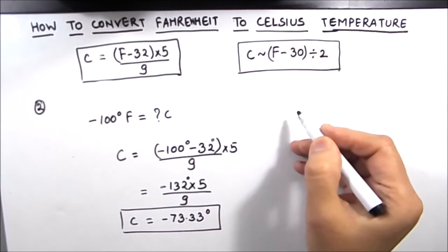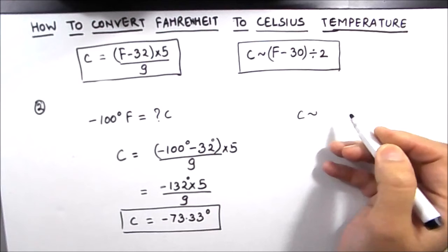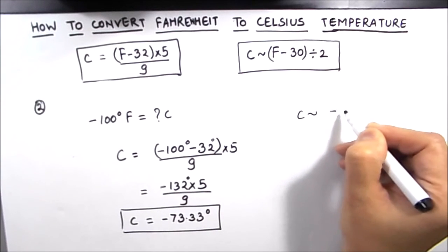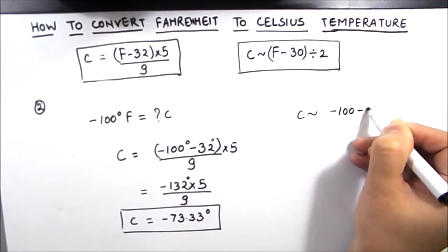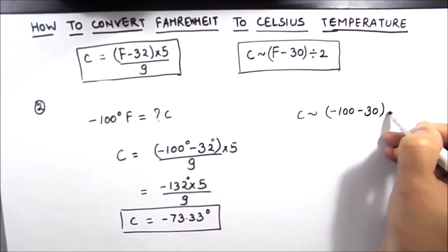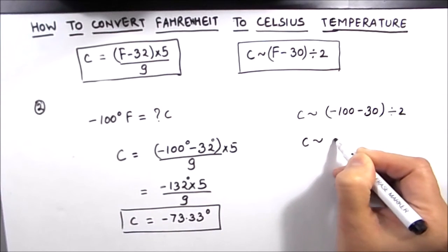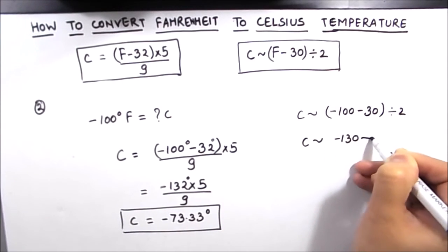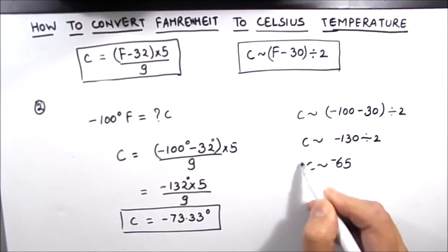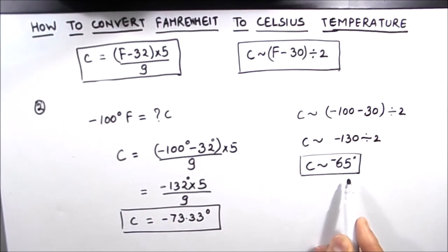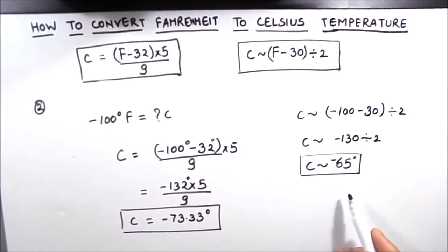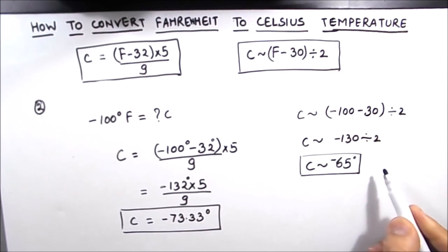We can also find the approximate value using the quick formula: minus 100 minus 30, divided by 2. So C is approximately equal to negative 130 divided by 2, which equals negative 65. This is the approximate value and negative 73.33 is the exact value. There is a large difference between the exact and approximate values, but for quick reference we can use the approximate formula.